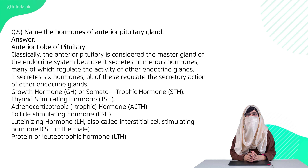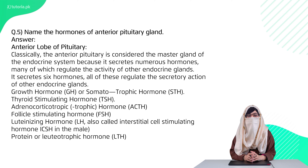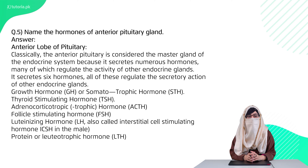Question five: name the hormones of the anterior pituitary gland. The pituitary gland has three lobes. The anterior pituitary gland secretes: growth hormone, thyroid stimulating hormone, adrenocorticotropic hormone, follicle stimulating hormone, luteinizing hormone, prolactin, and lutotrophic hormone.